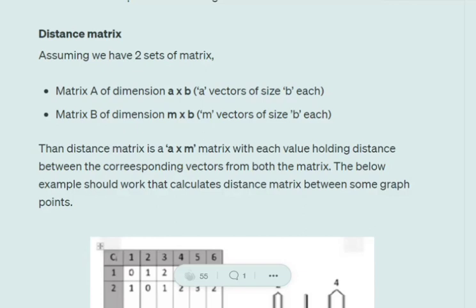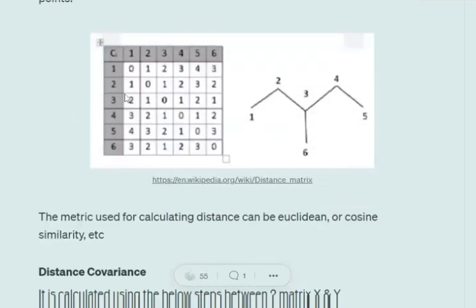Matrix A is a collection of a vectors and Matrix B is a collection of m vectors. The distance matrix is of dimension a x m, where we calculate the distance between each possible pair of vectors present in Matrix A and Matrix B, and fill the values in the matrix accordingly.